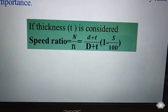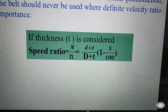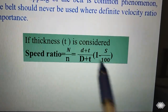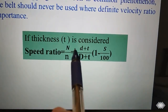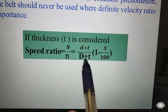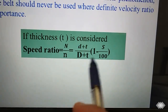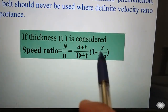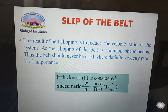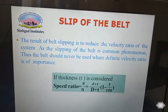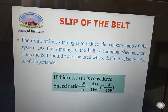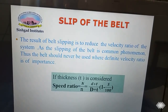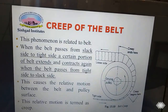Including belt thickness t, the expression for speed ratio considering slip becomes: capital N divided by small n equals (d + t) divided by (D + t) into (1 − S/100). That covers the slip of the belt drive.